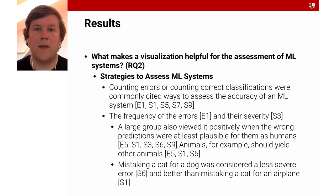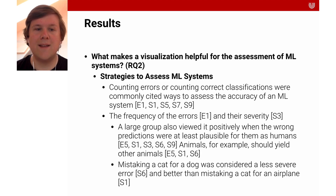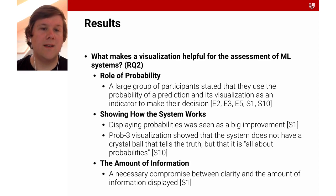The second research question was what makes a visualization helpful for the assessment of machine learning systems. We collected statements related to the criteria and strategies that participants apply to assess ML visualizations. These include counting errors or counting correct classifications, which were commonly cited ways to assess accuracy. Users also took the frequency and severity of errors into account. A large group viewed it positively when wrong predictions were at least plausible — for example, animals should yield other animals. Mistaking a cat for a dog was considered less severe than mistaking a cat for an airplane. Participants also stated that they used the probability of a prediction as an indicator to make their decision.